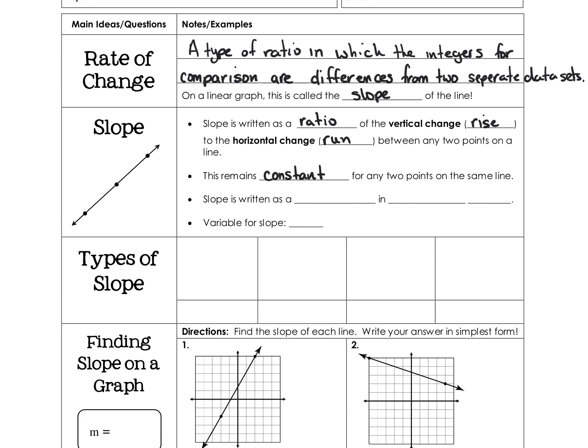Slope is always written as a fraction in simplest form, meaning reduce it as much as possible. If the numerator and denominator share common factors, you must reduce the fraction. The universal variable we use for slope is M.